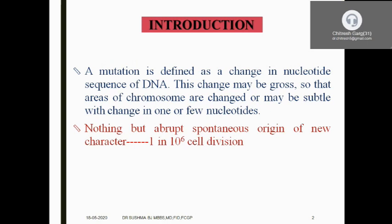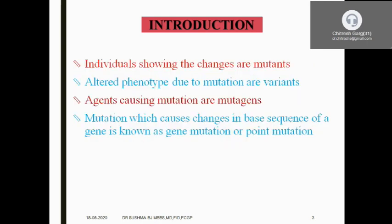What is a mutation? It is defined as a change in the nucleotide sequence of the DNA. This change can be gross, so that areas of the chromosome may be changed or deleted, or it may be subtle, with a change in one or a few nucleotides. As shown in the picture, there may be chromosomal deletion as well. Mutations are abrupt and spontaneous, occurring at a frequency of 1 in 10 to the power of 6 cell divisions. Individuals showing changes are called mutants, the altered phenotype is called a variant, and agents causing mutation are called mutagens.